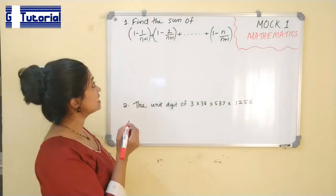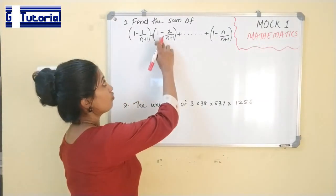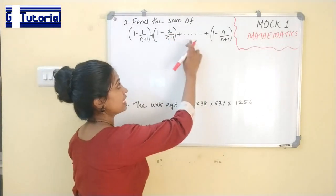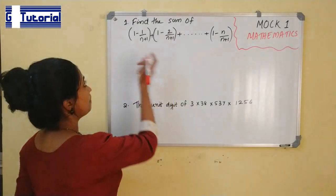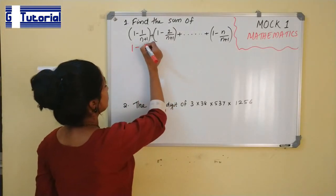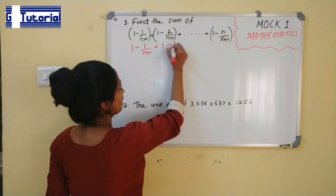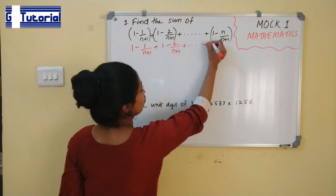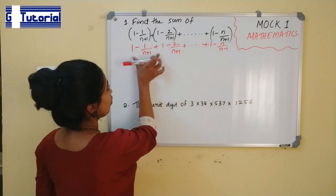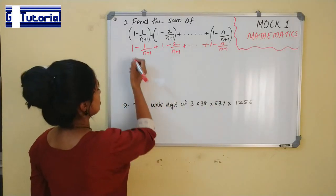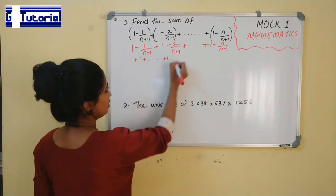This is the first question. Find the sum of (1 - 1/(n+1)) + (1 - 2/(n+1)) + ... + (1 - n/(n+1)). First let us open the bracket. So the terms will be 1 - 1/(n+1) + 1 - 2/(n+1) + ... + 1 - n/(n+1). Let us group together all the ones and the other terms: 1 + 1 + ... + 1 minus...